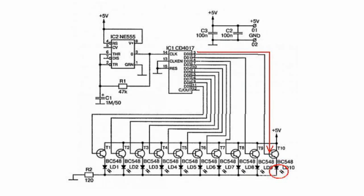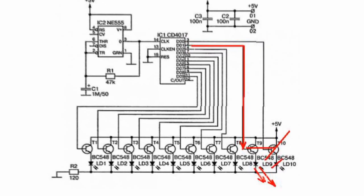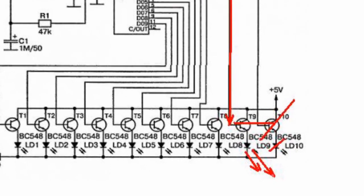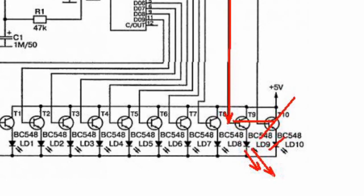The second impulse generates a logical one on the next counter output. At the same time, low voltage will appear on the previous transistor and close it. The LED will also turn off, then everything happens in the same sequence continuously on each of ten outputs of the chip.